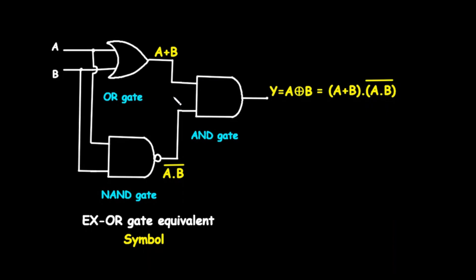Now for a more advanced concept. We can build an EXOR gate using a combination of other, more fundamental gates. This circuit shows how to create the EXOR function using one OR gate, one NAND gate, and one AND gate. The inputs A and B are fed into two separate gates simultaneously. First, A and B go into an OR gate — its output is A+B. At the same time, A and B also go into a NAND gate, whose output is the negation of A·B, written as A·B with a bar over it.